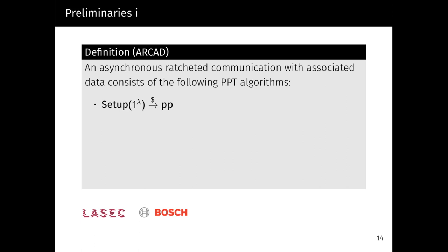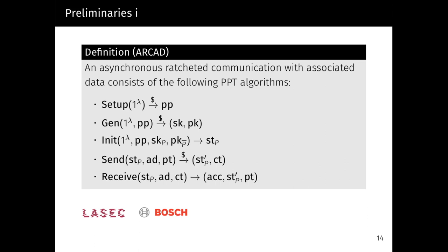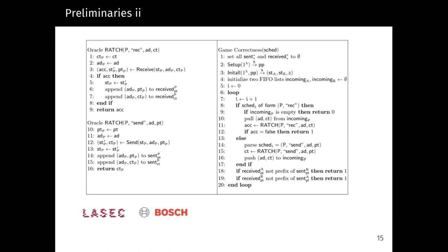Before jumping into the meat of the paper, we need to revisit some general concepts. An asynchronous ratcheted communication protocol with associated data is a five-tuple of PPT algorithms: a setup algorithm that creates the public parameters according to some security parameter; a key generation algorithm that creates a public-secret key pair; an initialization algorithm that creates the initial state of a user; a send routine that produces a ciphertext and an updated state; and a reception procedure that, given a ciphertext, produces the plaintext, an updated state, and a flag indicating whether the decryption succeeded. In terms of correctness, we demand that any untempered sequence of ratcheted send and ratcheted receive calls be permitted as long as no messages are dropped or a sequence of messages from a user are received in a different order.